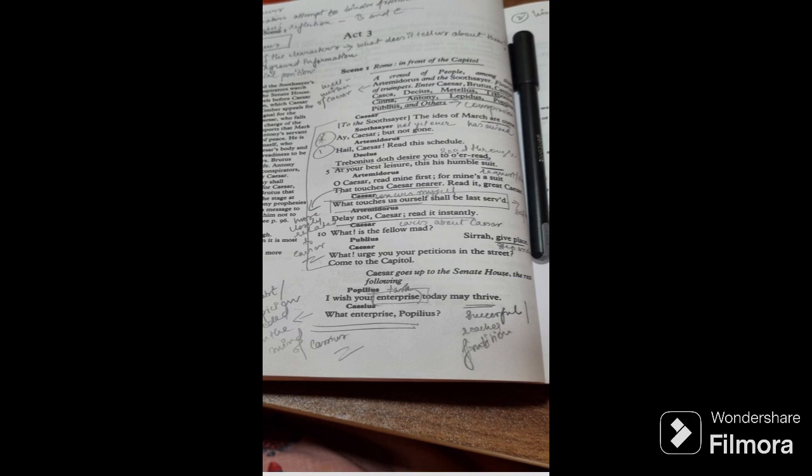So let's begin with the scene. It's Rome in front of the capitol. A crowd of people are there and among them we have Artemidorus who as if you remember from Act 2 Scene 3 was the person who is about to give the letter. So what are we going to do when we are writing our answers? We will write who is Artemidorus, a well-wisher of Caesar who intends to give his plea or his suit to Caesar informing him about the impending or upcoming danger. Then we have soothsayer, another well-wisher of Caesar. And we have the conspirators: Cassius, Casca, Decius, Metellus, Trebonius, Cinna, Lepidus, Popilius, Publius and others. Antony is not one of them.